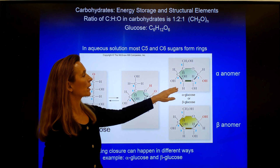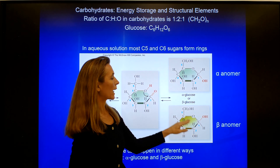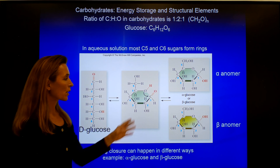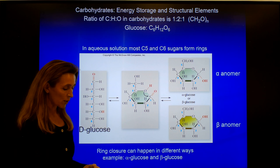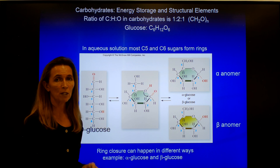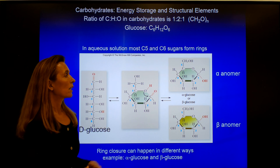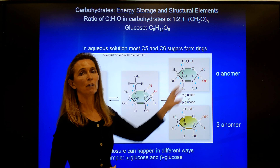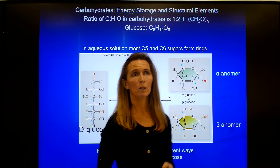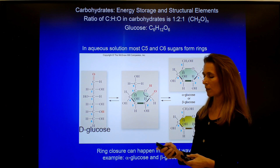These are called either an alpha-anomer or a beta-anomer. This is important because enzymes that are very specific for the molecules they cleave cannot cleave both linkages — they cannot cleave both alpha and beta linkages.